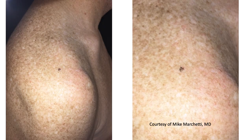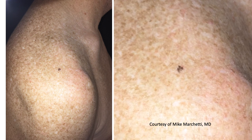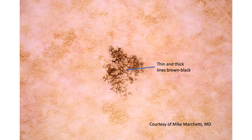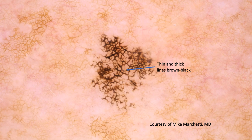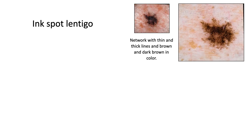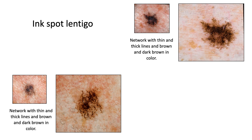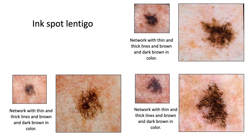Here's an example: you see the clinical lesion — very dark, very concerning, could be melanoma or pigmented BCC. But on dermoscopy, you have thin and thick lines, brown and black, and the network is falling apart, dispersing towards the periphery. More examples show this network with thin and thick lines in brown and dark brown color. This is very characteristic — once you see one, you'll always recognize it.